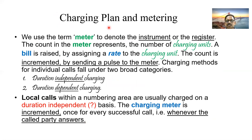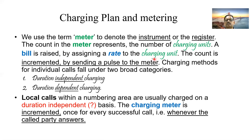We use the term 'meter' to denote either the instrument or the resistor. In electronic exchanges, it is a resistor. The count in the meter represents the number of charging units, and a bill is raised by assigning a rate to each charging unit — for example, one rupee per unit. The count is incremented by sending a pulse to the meter.